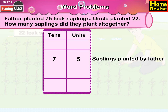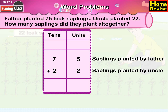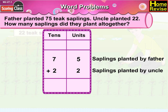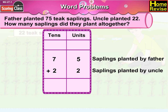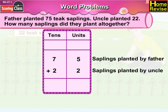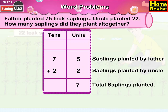Father planted 75 teak saplings and Uncle planted 22 teak saplings. In order to find the total number of plants planted altogether, we will add 75 to 22. That is 7 tens 5 units plus 2 tens 2 units. In the units column, 5 plus 2 is 7.